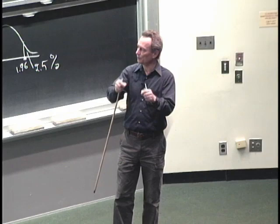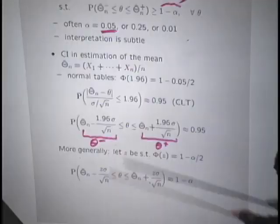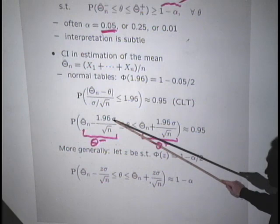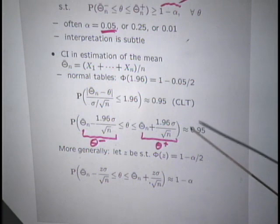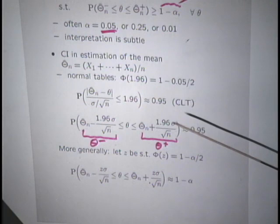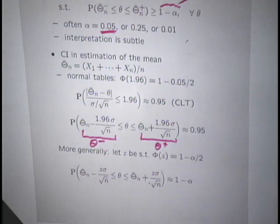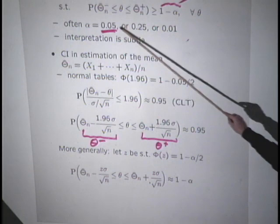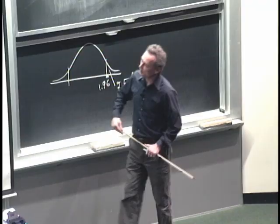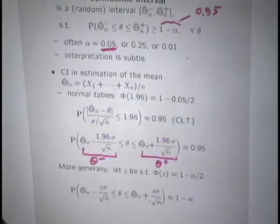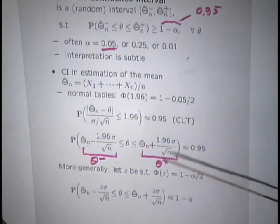This is approximately — not exactly — a 95% confidence interval because we've used the central limit theorem approximation. More generally, if you set alpha to some other number, you look at the normal tables to find the value z such that the tail has probability alpha over 2, and use that z instead of 1.96. To be precise, we should call this an approximate confidence interval since the central limit theorem is an approximation, but for reasonable values of n it works well.